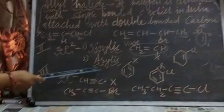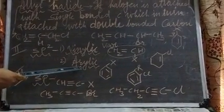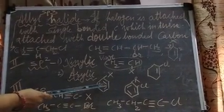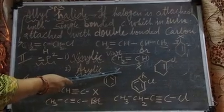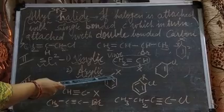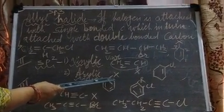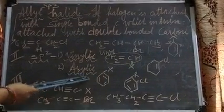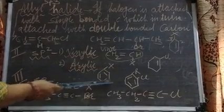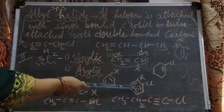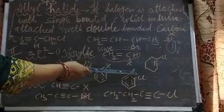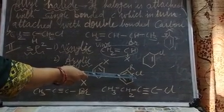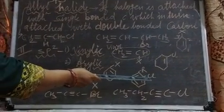SP2 hybridized Haloalkanes also include Arylic Halides. In an Arylic Halide, an Aryl group is present and Halogen is directly attached to the Aryl (Benzene) ring. The Carbon through which Halogen is attached shows double bond character, making it SP2 hybridized. Even if an aliphatic alkyl chain is present on the Benzene ring, as long as Halogen is directly attached to the ring, it is an Arylic Halide.